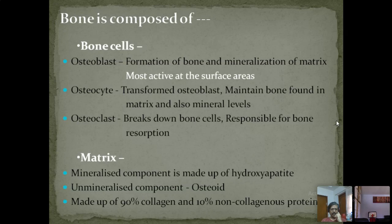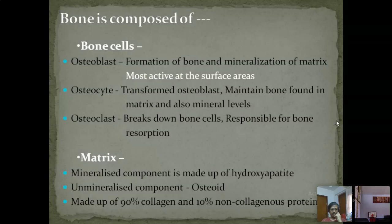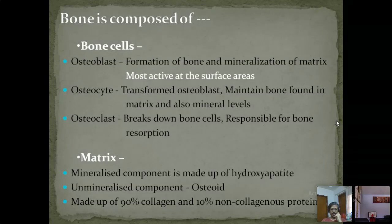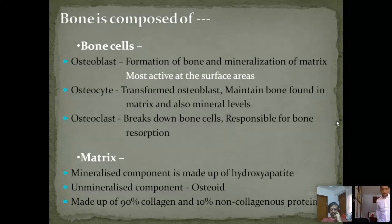Osteoblasts take part in the formation of bone and mineralization of matrix, and are most active at the surface areas. Osteocytes develop from osteoblasts and maintain bone matrix and mineral levels. Osteoclasts break down bone cells and are responsible for bone resorption. The bone matrix is the mineralized component made of hydroxyapatite, while the unmineralized component is known as osteoid, made up of 90% collagen and 10% non-collagenous proteins.